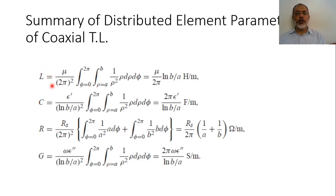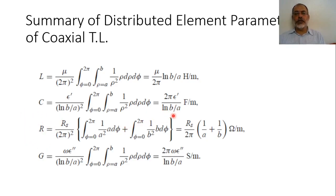In summary, for the coaxial transmission line: the inductance per unit length is L = μ/(2π)·ln(b/a); the capacitance per unit length is C = 2πε'/ ln(b/a); the resistance per unit length is R_s/(2π)·(1/a + 1/b); and the conductance per unit length is G = 2π·ω·ε''/ln(b/a).